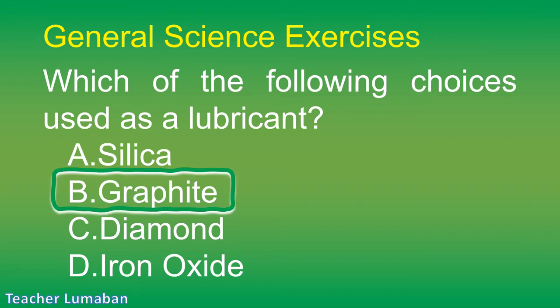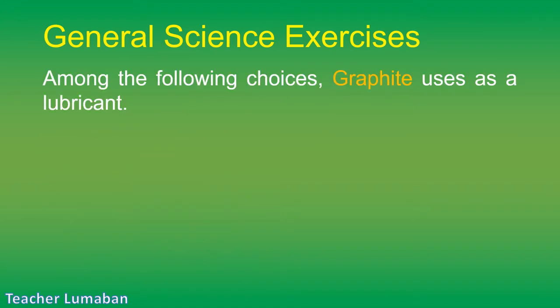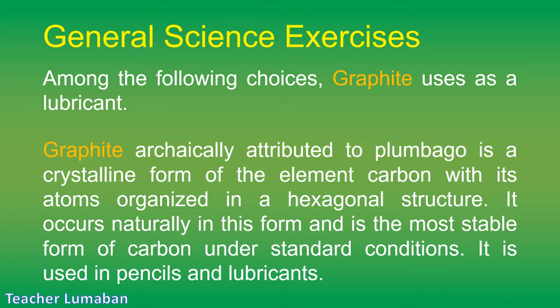The correct answer is Letter B: graphite. Among the following choices, graphite is used as a lubricant. Graphite, archaically attributed to plumbago, is a crystalline form of the element carbon with its atoms organized in a hexagonal structure. It occurs naturally in this form and is the most stable form of carbon under standard conditions. It is used in pencils and lubricants.